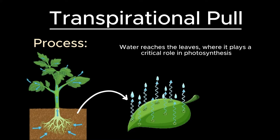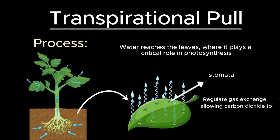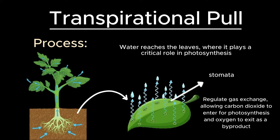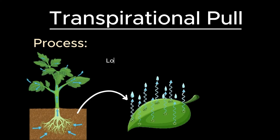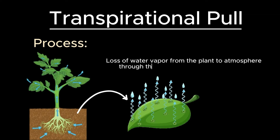Leaves have tiny openings on their surfaces called stomata. These stomata regulate gas exchange, allowing carbon dioxide to enter for photosynthesis and oxygen to exit as a by-product. During this process, water vapor is also lost to the atmosphere. The loss of water vapor from the plant to the atmosphere through the stomata is called transpiration.